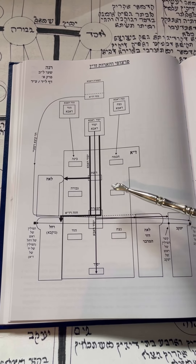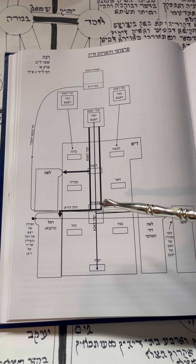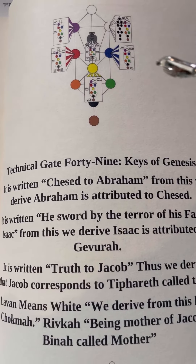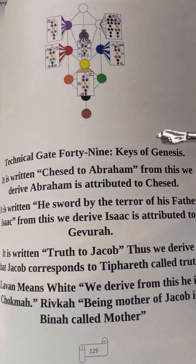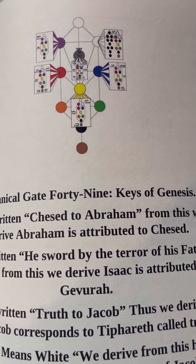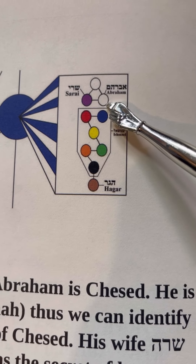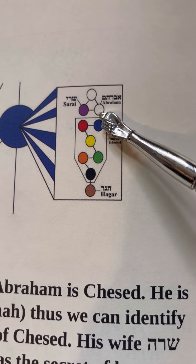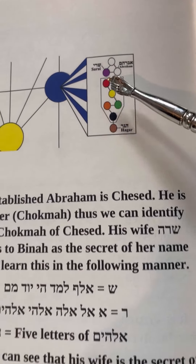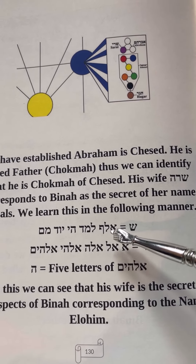I'll explain the particulars on how the brains are developing and where they're deriving this from the Torah. For those of you that have a copy of Book 4, it is explained there in Technical Gate 49, The Keys of Genesis, the individual breakdown of each partsuf. For example, it's written Chesed to Abraham. Abraham is called Father, and this alludes to the Sefirah of Chokhmah called Father. So Abraham personifies the Chokhmah within the Sefirah of Chesed. And his wife personifies Sarah — this is Binah, which is the Sefirah called Elohim, in which the letter Shin alludes to the name of Elohim if you were to spell its letters out.